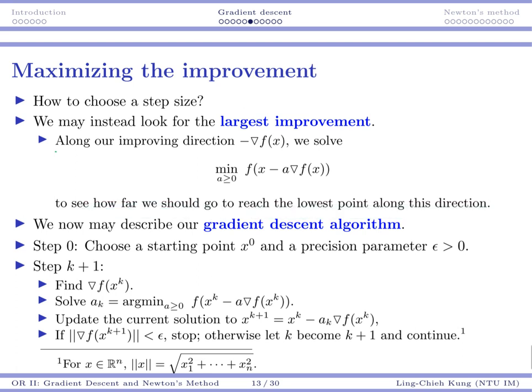So we now may describe our gradient descent algorithm. This is just one way to implement the gradient descent algorithm. At least you have other ways to choose step size, but here we just want to introduce you this one. So your step zero is to choose a starting point x0, and don't forget x0 is a vector, and a precision parameter epsilon. And then for each step k+1, we will try to find your gradient at xk. Then at x0, we will try to find its gradient. And then we will try to move along the negative direction.